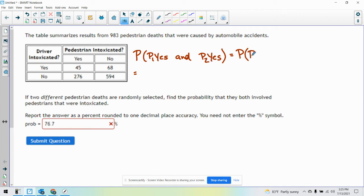So this is going to be the probability that pedestrian one was intoxicated times the probability that pedestrian two was intoxicated given pedestrian one was intoxicated.